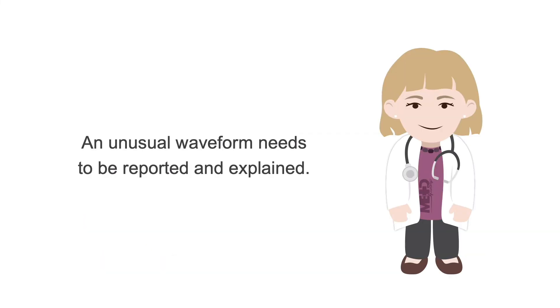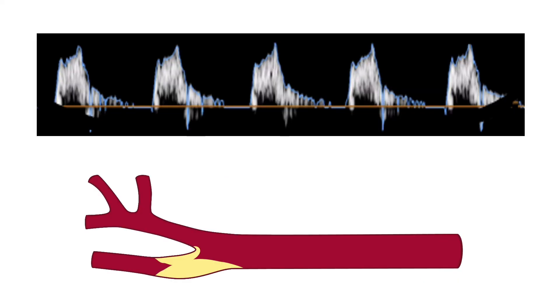You may also come across some unusual waveforms. It is important to remember that if a waveform doesn't have the normal expected characteristics, there is an underlying reason for this. You must report this finding and be able to suggest possible causes. For example, we have already learned that a high-resistant waveform in the CCA may be observed when the ICA is occluded.